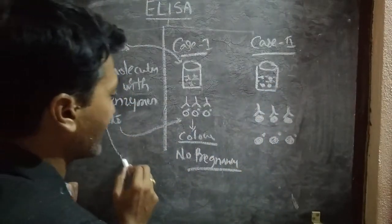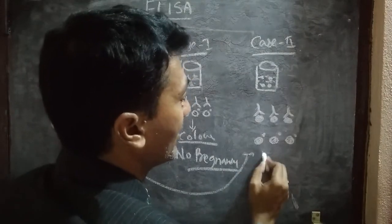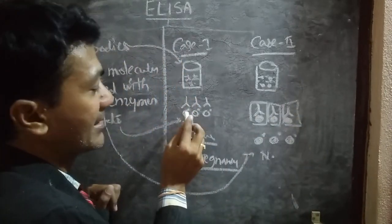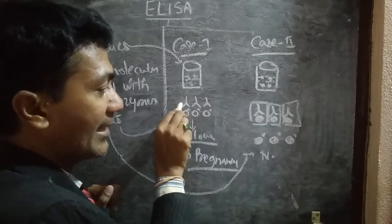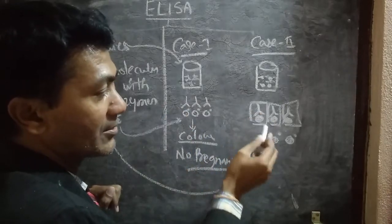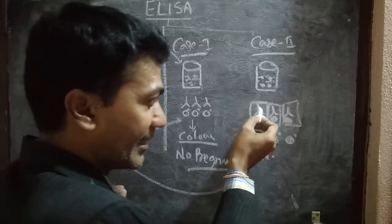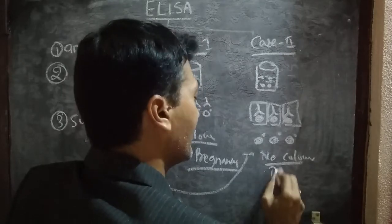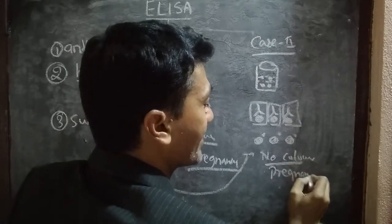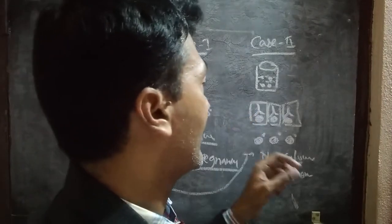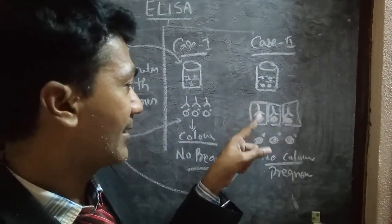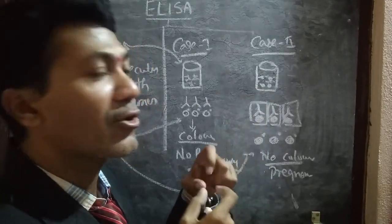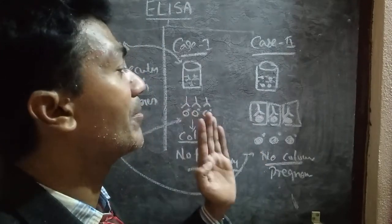When we add the substrate to this sample, no color appears. No color appears because the natural HCG-antibody complex does not give any color — only the enzyme-linked HCG and antibody complex gives color. Since natural HCG and antibody do not give color, there is no color appearance. No color means pregnancy. Here there is a competition between natural HCG and enzyme-linked HCG for binding with the antibody. That is why this method is called a competitive assay.